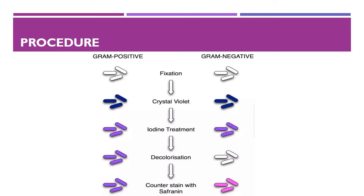Then pour crystal violet dye and keep for about 30 seconds to one minute, and rinse with water. Flood with Gram's iodine for one minute and wash with water. Then wash with 95% alcohol or acetone for about 10 to 20 seconds and rinse with water. Add safranine for about one minute and wash with water.